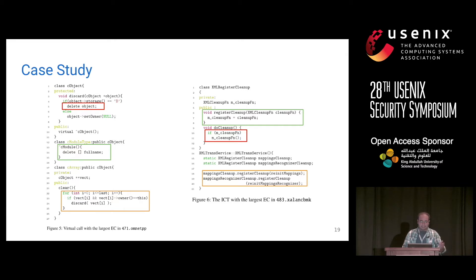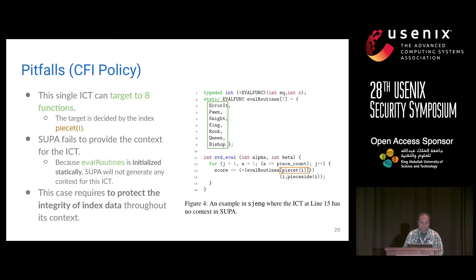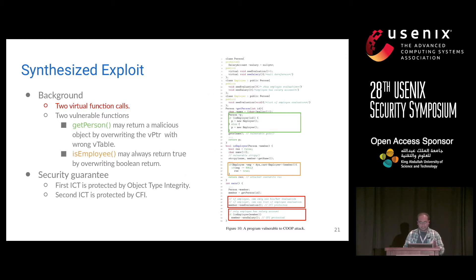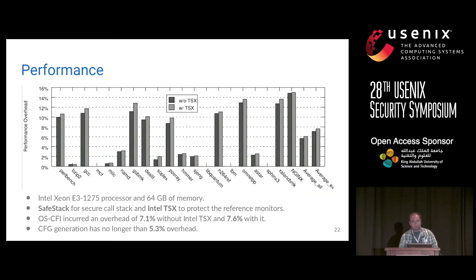For the case study there is a virtual call case on the left side, but we are already out of time so I'm skipping this. This is one of the problems we cannot solve using call-site sensitivity, path sensitivity, or origin sensitivity because a static error doesn't have any of those connected information. We have this synthesized exploitation example showing that we actually need both pointer integrity and the CFI system for any program — we cannot use one without the other. For performance, without Intel TSX the overhead is 7.1%, and with Intel TSX it is 7.6%. The CFG generation has almost 5% overhead.